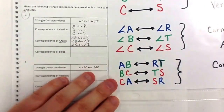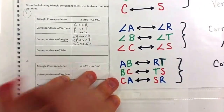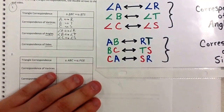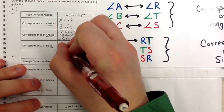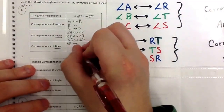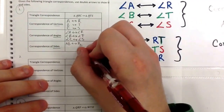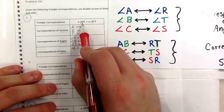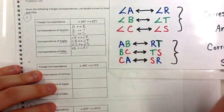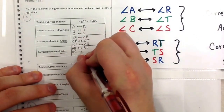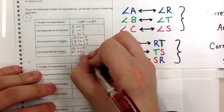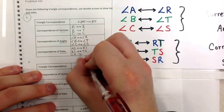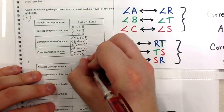For angles we use the angle symbol, for vertices we use just the letter, and for sides we use two letters next to each other. So for sides: side AB corresponds to RT, BC corresponds to TS, and CA corresponds to SR. You have to write small, but you need to fit three things in each box.